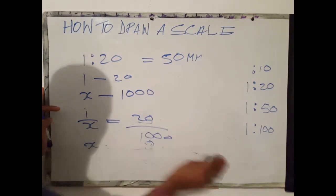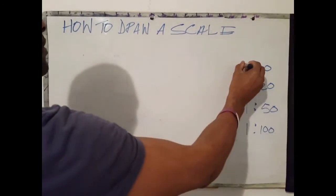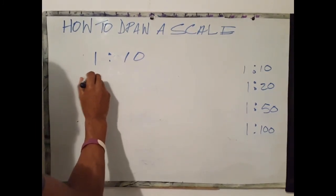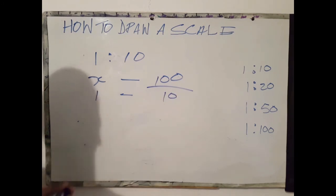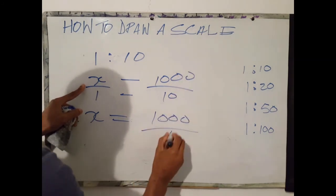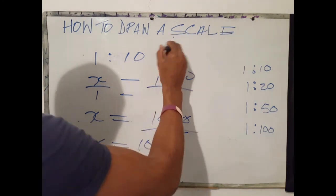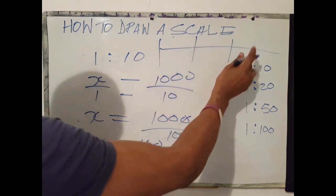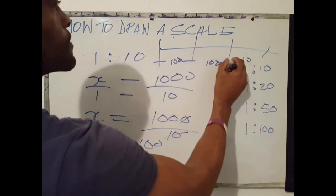Let's do another calculation. Let's take 1 to 10. Same principle applies. On a 1 to 10 scale, x maps onto 1000, 1 maps onto 10. What's the value of x? X would equal 1000 divided by 10, so x in this case would represent 100 millimeters. It means therefore when you are designing your scale, you would mark off increments of 100 millimeters.